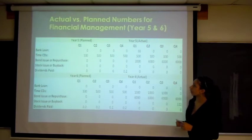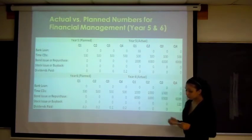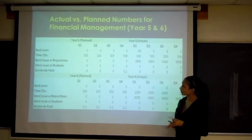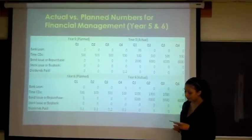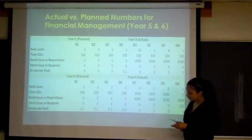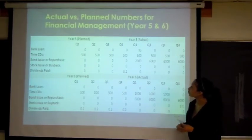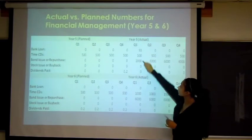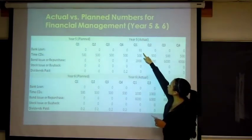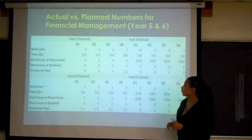First, we're going to look at our bank loans for year 5 plan. We haven't projected borrowing due to the fact that we are expected to have a higher cash flow throughout years 5 and 6. However, due to low revenue and low sales, we had a required bank loan of $93,000 quarter 1 year 5, but thereafter we had no other bank loans.